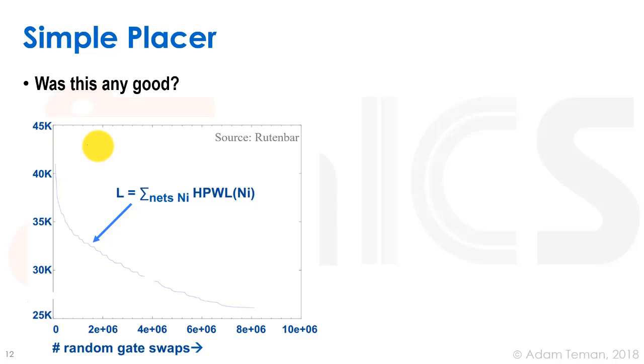That's a very simple placer. Was it any good? We can see this type of graph that Rutenbar provided where you have the total wire length. If you start over here and start doing all these millions of swaps - and you see that the numbers are millions - we go down pretty quickly, we get an improvement.